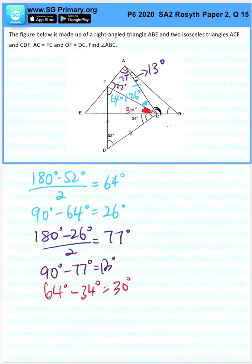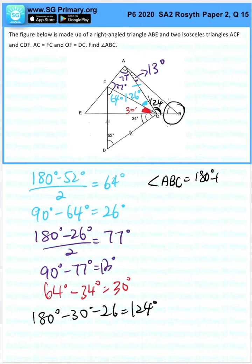So in order to find the black portion, we take 180 minus 30 minus 26, which will give us 124 degrees. So we have two portions. We can finally find angle ABC: 180 minus 13 minus 124 will give me 43 degrees.